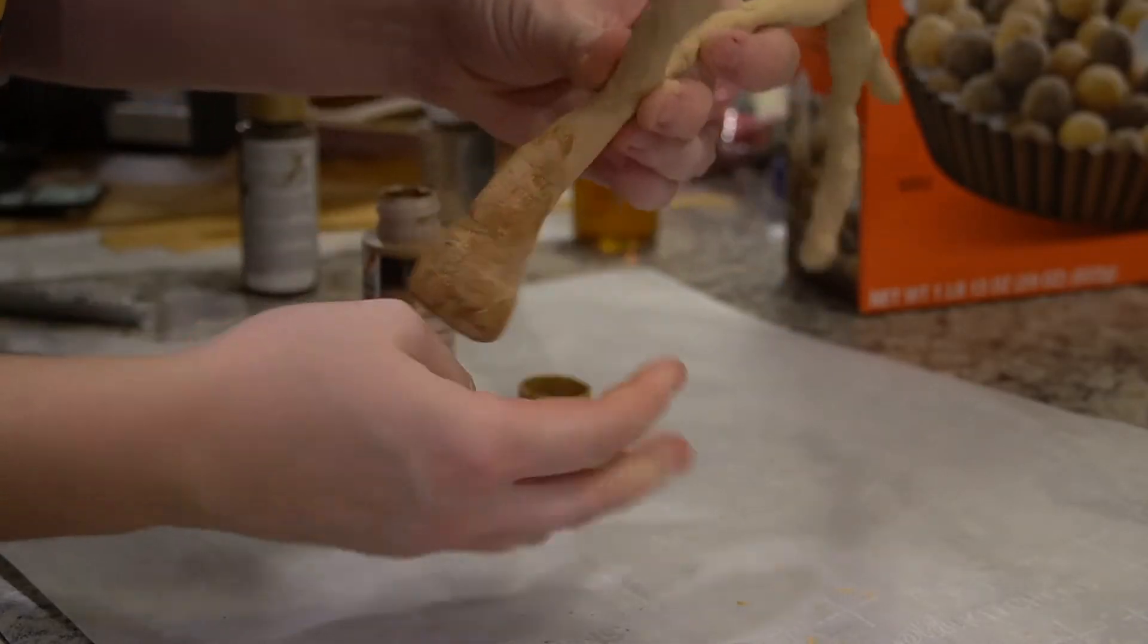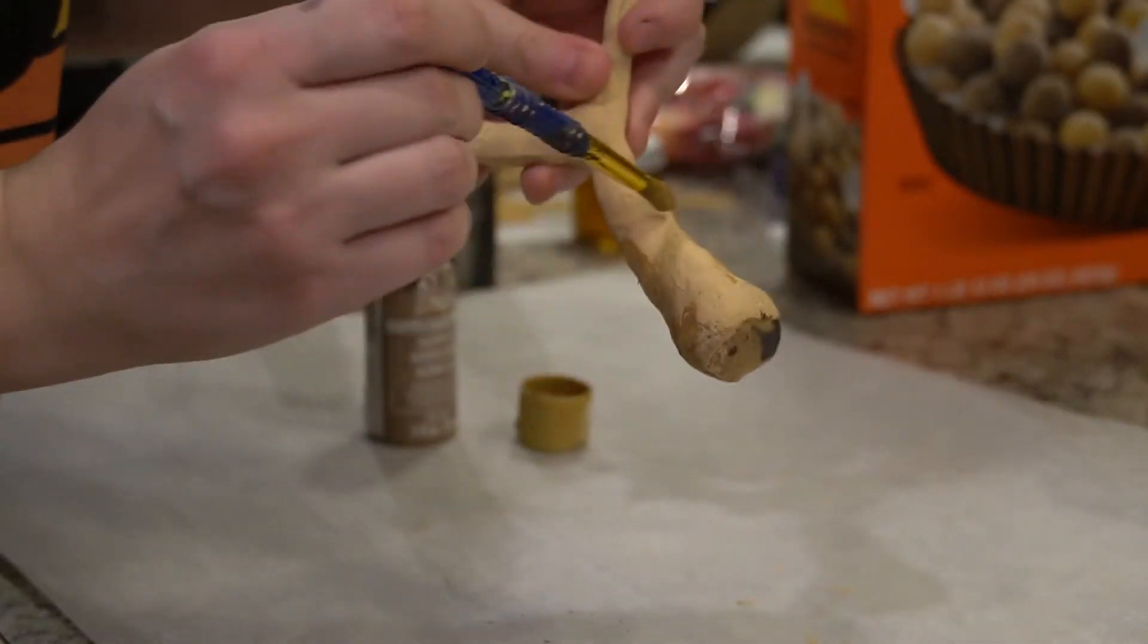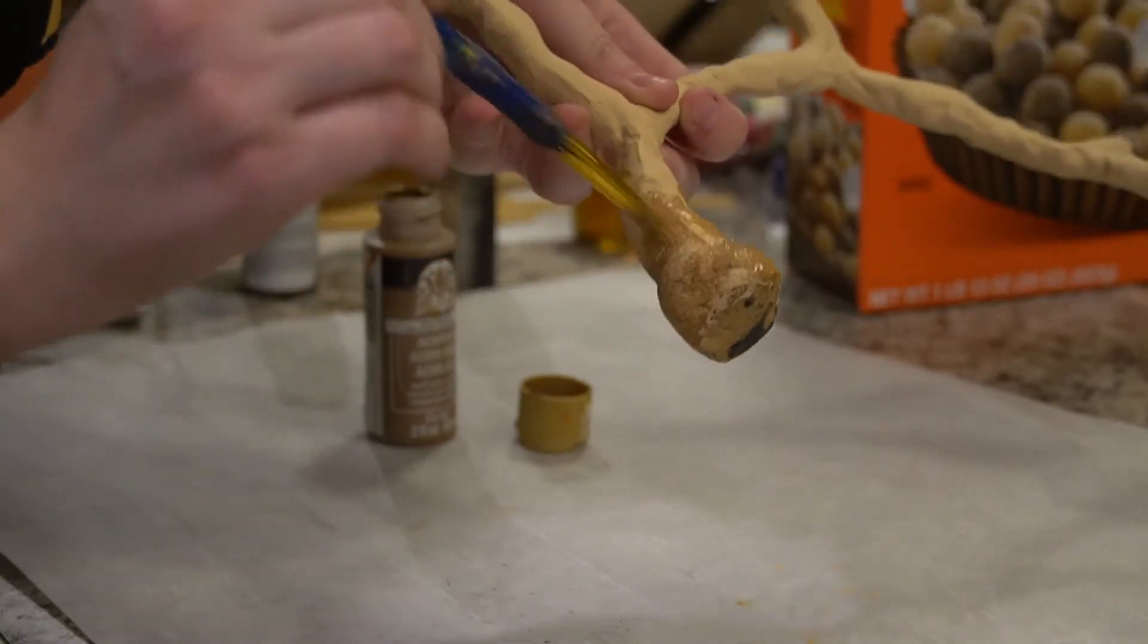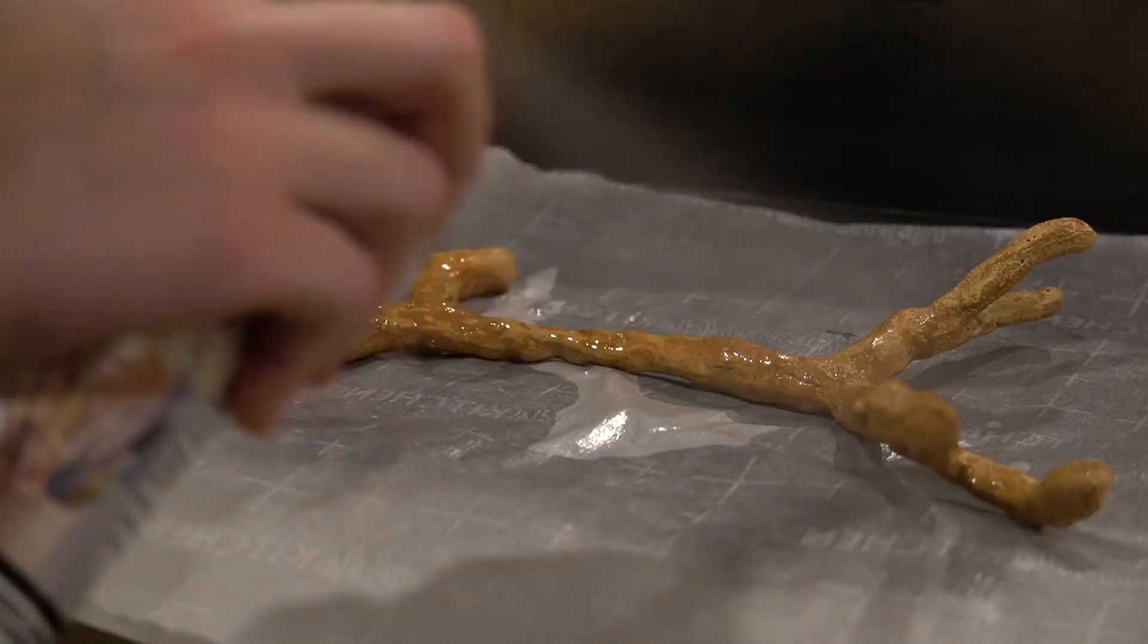Primed everything with about seven layers of plastic dip and then just painted it with acrylic paints. To create the texture or pattern of the antlers that I really wanted I just smeared paint all across it and then rubbed some of it off and it created this really nice texture that I liked.